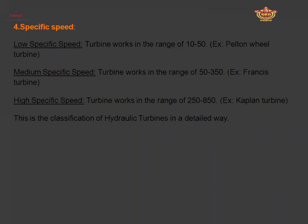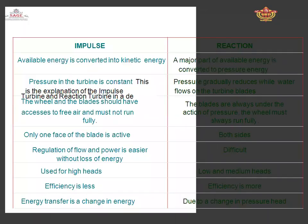This completes the classification of hydraulic turbines. Now, what is the difference between the impulse and reaction turbine? In the case of a reaction turbine, the major part of the available energy is in the form of pressure energy. The pressure in the turbine is above atmospheric, so the wheel must always run fully submerged. The pressure gradually reduces as water flows through the turbine blades — that is the case of the reaction turbine.